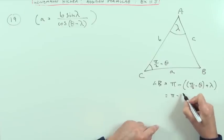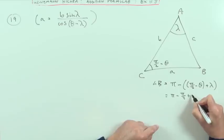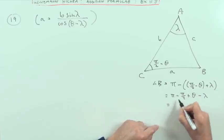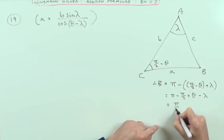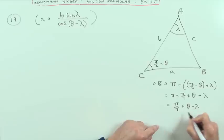So you've got pi minus pi upon 2, but plus theta, but minus lambda. So pi minus pi upon 2 is just pi upon 2 plus theta minus lambda.